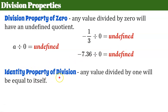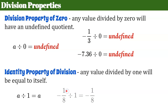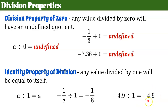The identity property of division states that any value divided by one will be equal to itself. So any number A divided by one is equal to A. Negative one-eighth divided by one — negative one-eighth is the quotient. Negative 4.9 divided by one is equal to negative 4.9. So you can see that our property of zero and our identity property are the same for integers as they are for rational numbers.